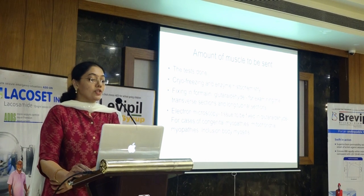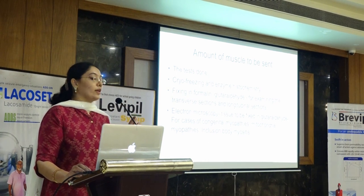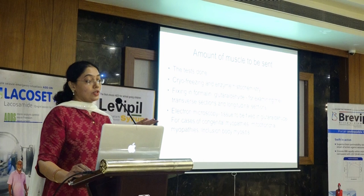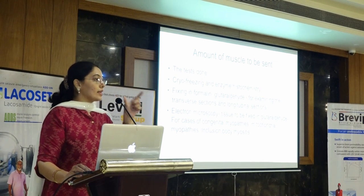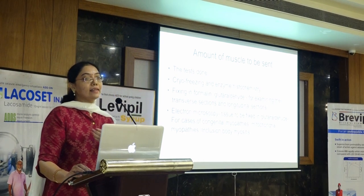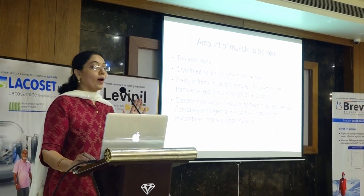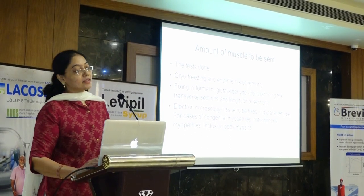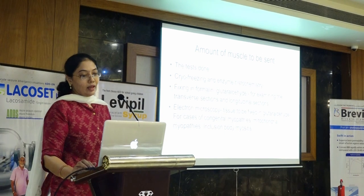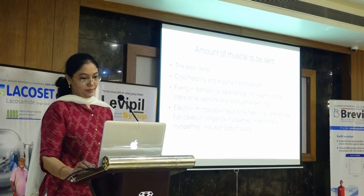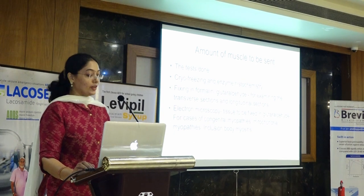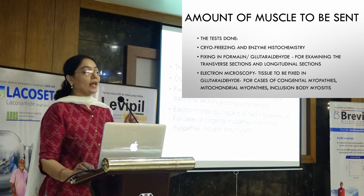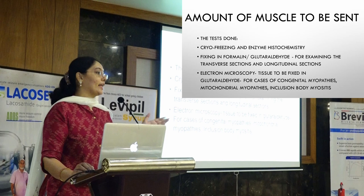We can examine transverse sections and longitudinal sections. When we do cryo-processing, we see only the transverse section — just one cross-section — not the entire length of the muscle. That is why it is complemented with fixing in formalin and examining the longer length of the muscle. If needed, like in cases of congenital myopathy such as Nemalin rod myopathy, electron microscopy may be required. We can keep tissue aside for electron microscopy, which can be taken up later. At least 2 by 1 centimeter of muscle is a must.